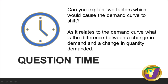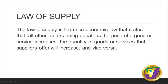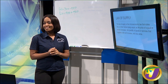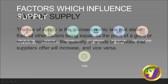Now we're going to look at the concept of supply. Supply is the willingness and ability of producers to create goods and services and take them to market. The law of supply states that as price increases, the quantity of goods or services offered will increase. If the price decreases, the quantity supplied will also decrease. For a supplier, it's an incentive to know that the price of the good is increasing because they're going to make more money.